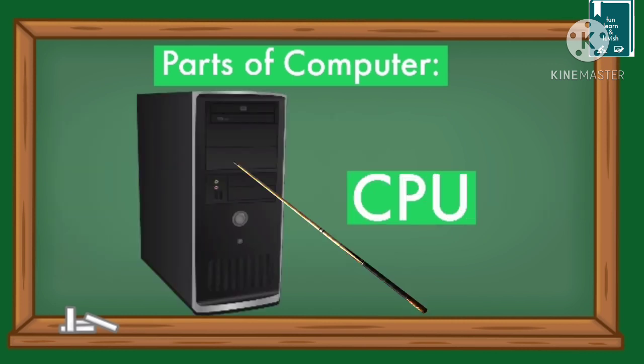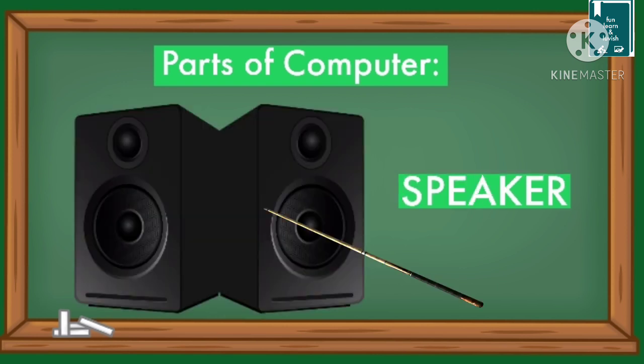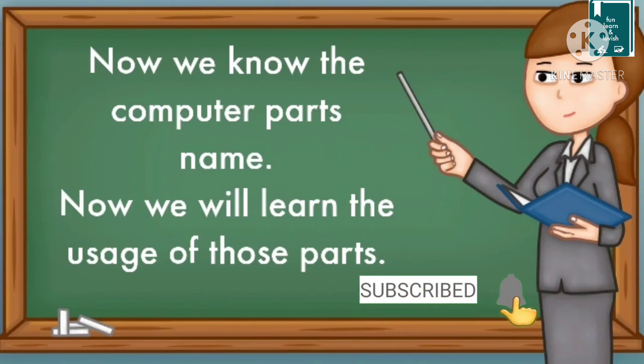This is CPU. What is this? CPU. This is printer. What is this? Printer. These are speakers. What are these? Speakers. Now we know the computer parts names, so we will learn the usage of those parts.